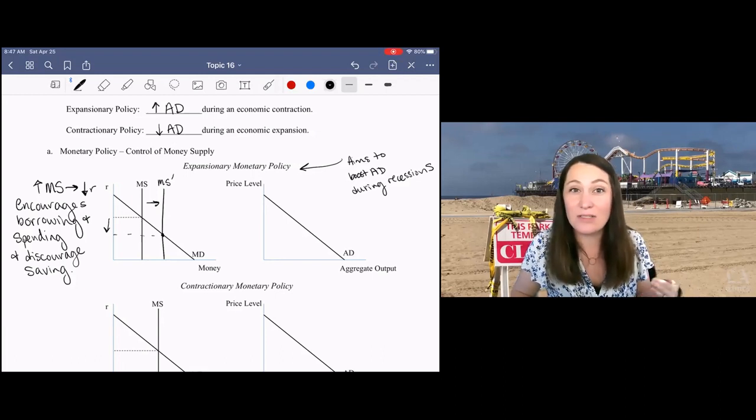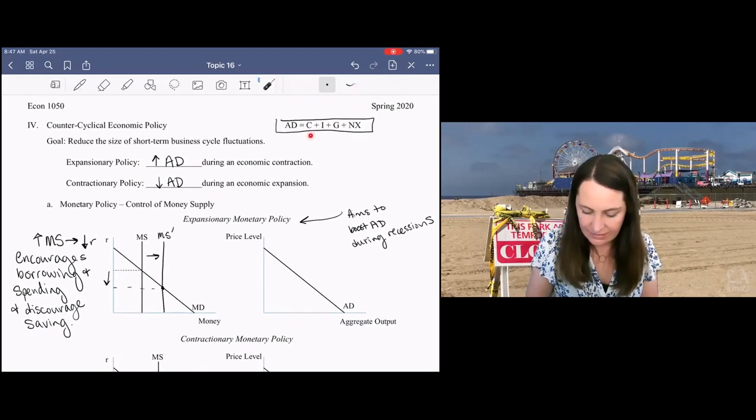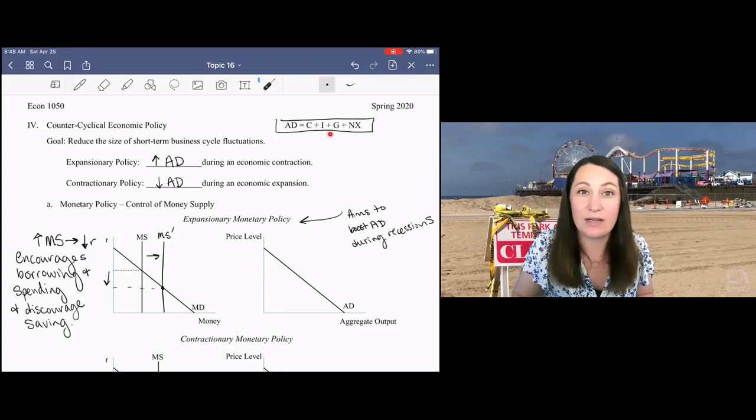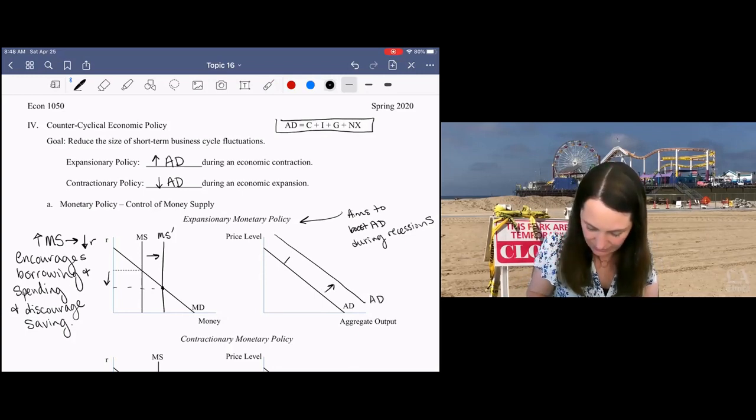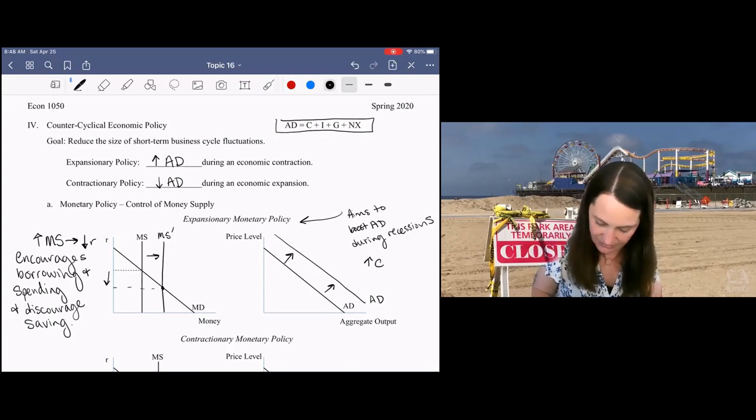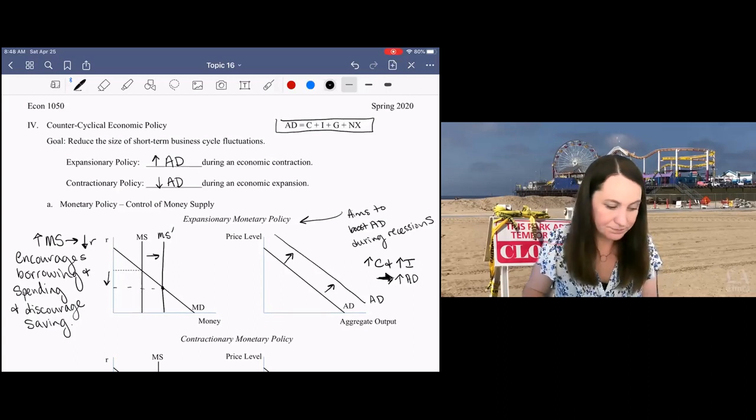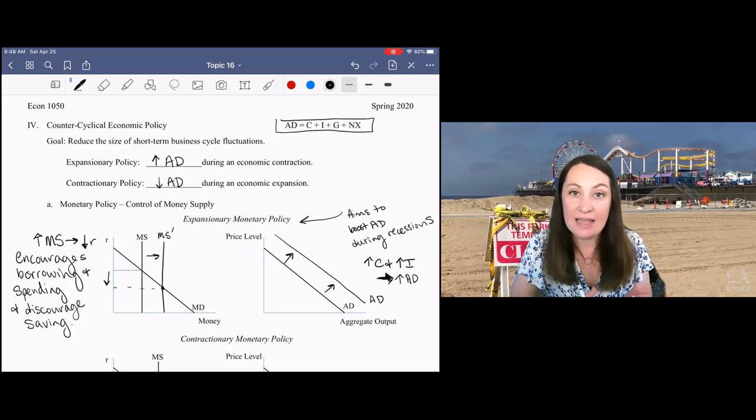If the interest rate is low, consumers are going to be more likely to spend their money instead of save it. That's going to increase consumer spending, C. Businesses are going to be able to get loans more cheaply, so that's going to encourage investment spending. That's going to shift out aggregate demand. Aggregate demand will increase as we have increases in both consumption and investment spending, and that helps to counteract a recession that was driven by a negative shock to aggregate demand.